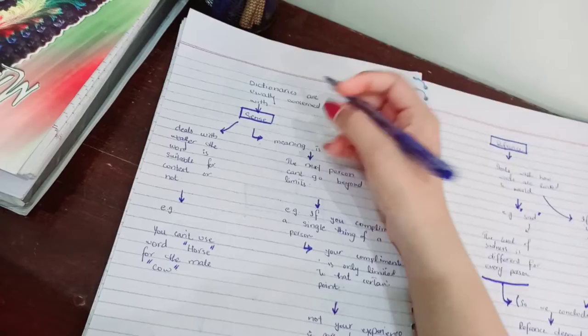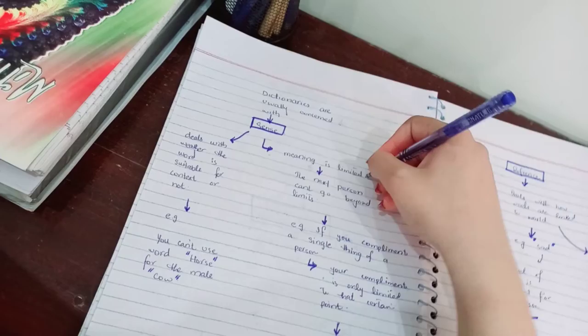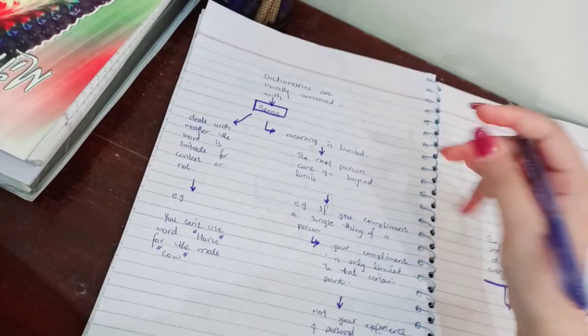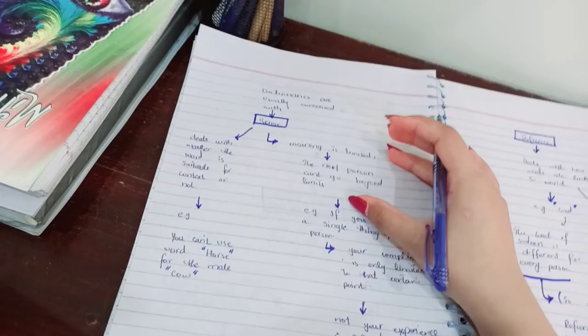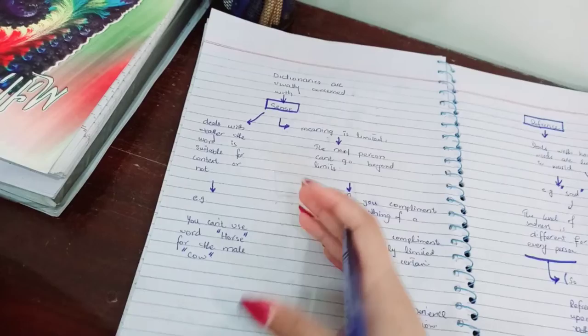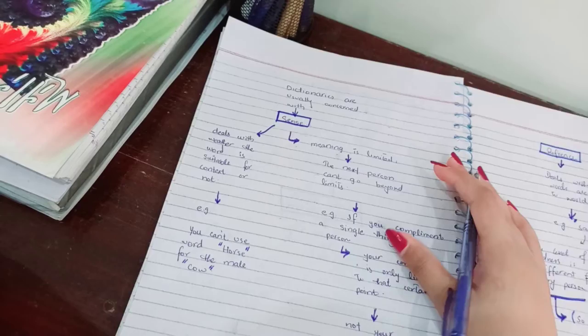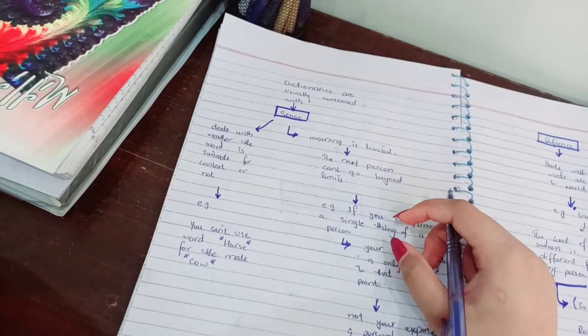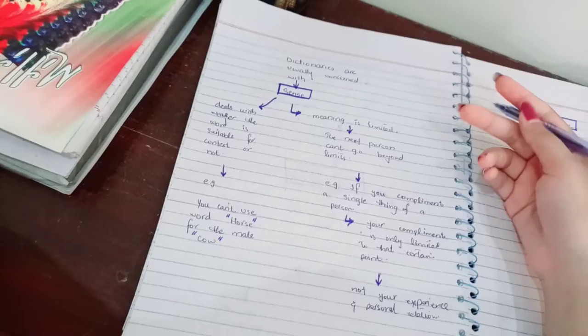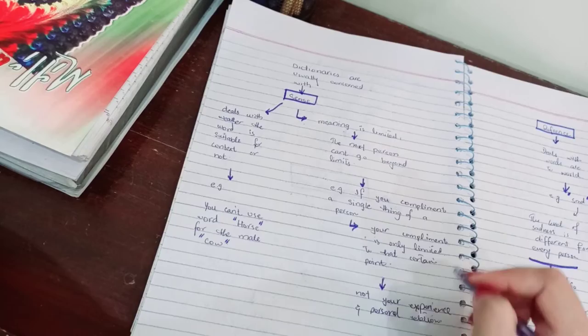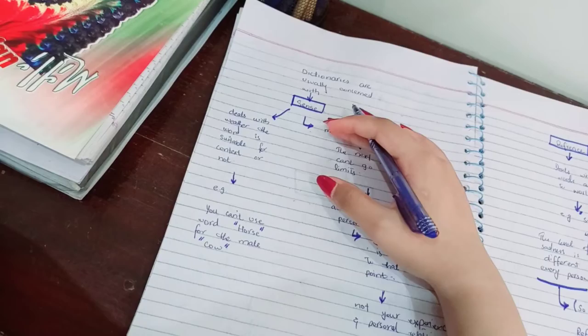Dictionaries are usually concerned with sense. In sense, the meaning is limited — the next person cannot go beyond that limit. For example, if you compliment one thing about a person, like saying 'your watch is looking beautiful,' that compliment is just limited to the watch. It doesn't involve your personal relationship or personal attachment toward that person — just the watch they are wearing. The sense is basically limited in meaning.